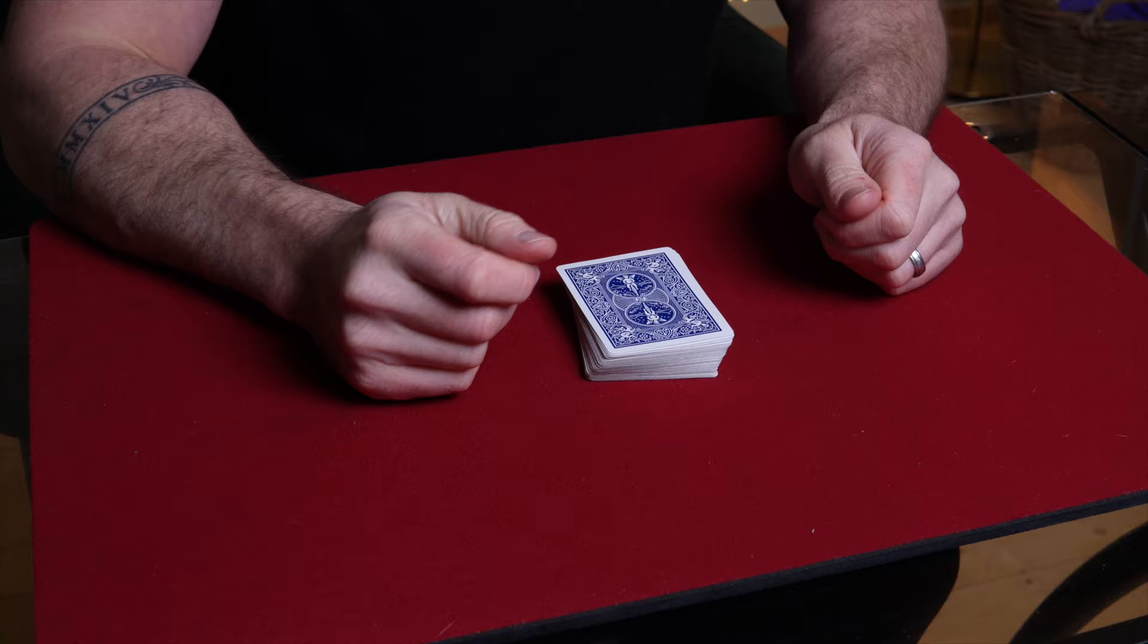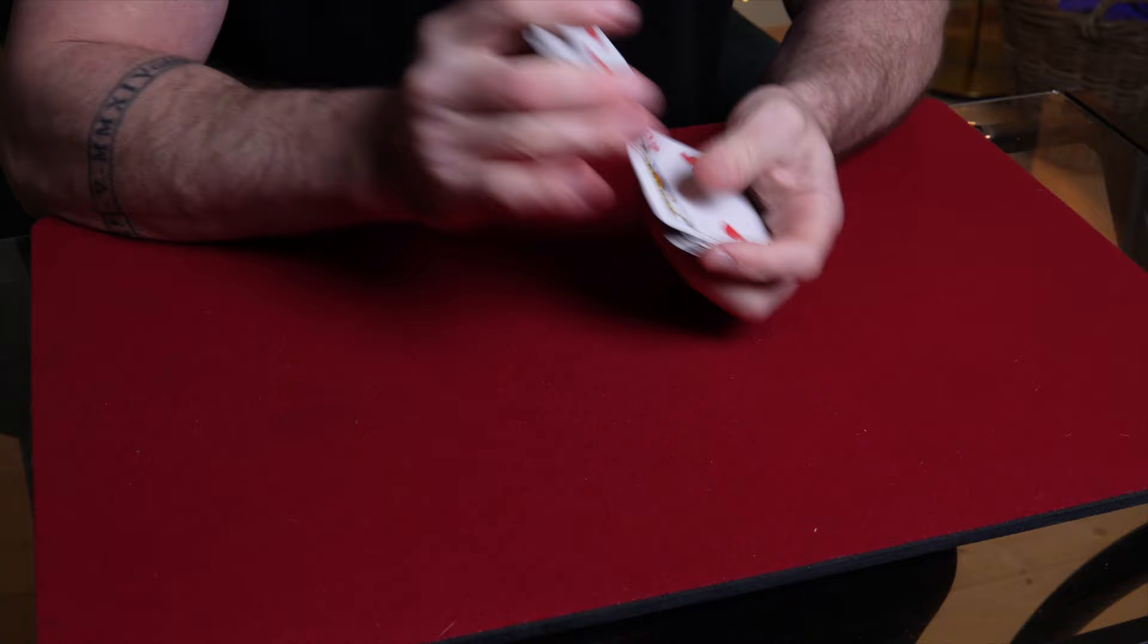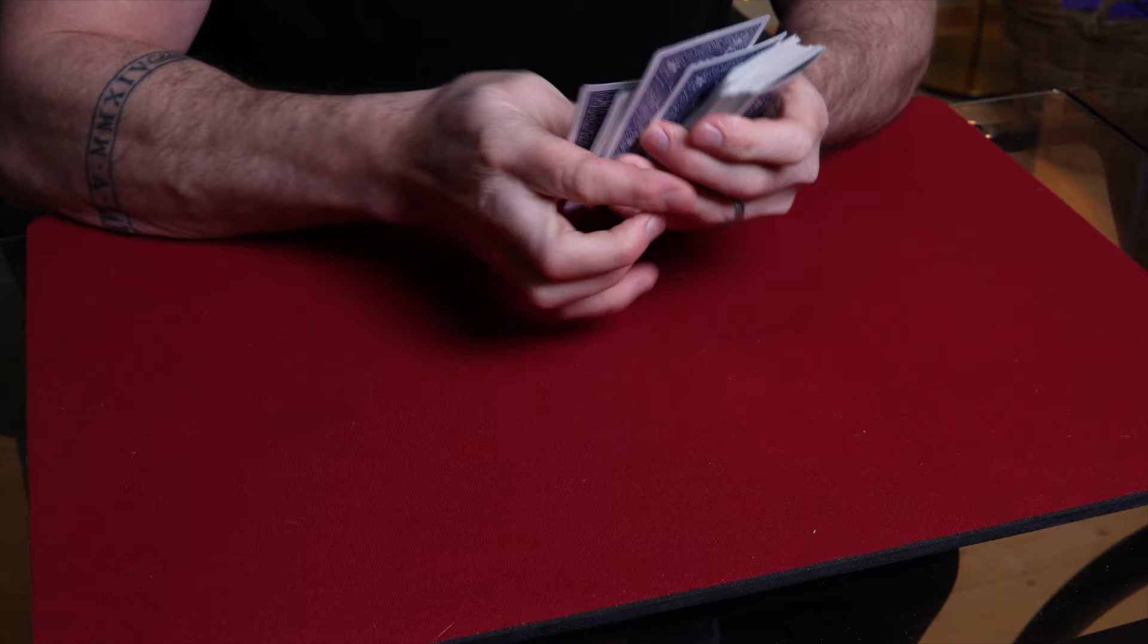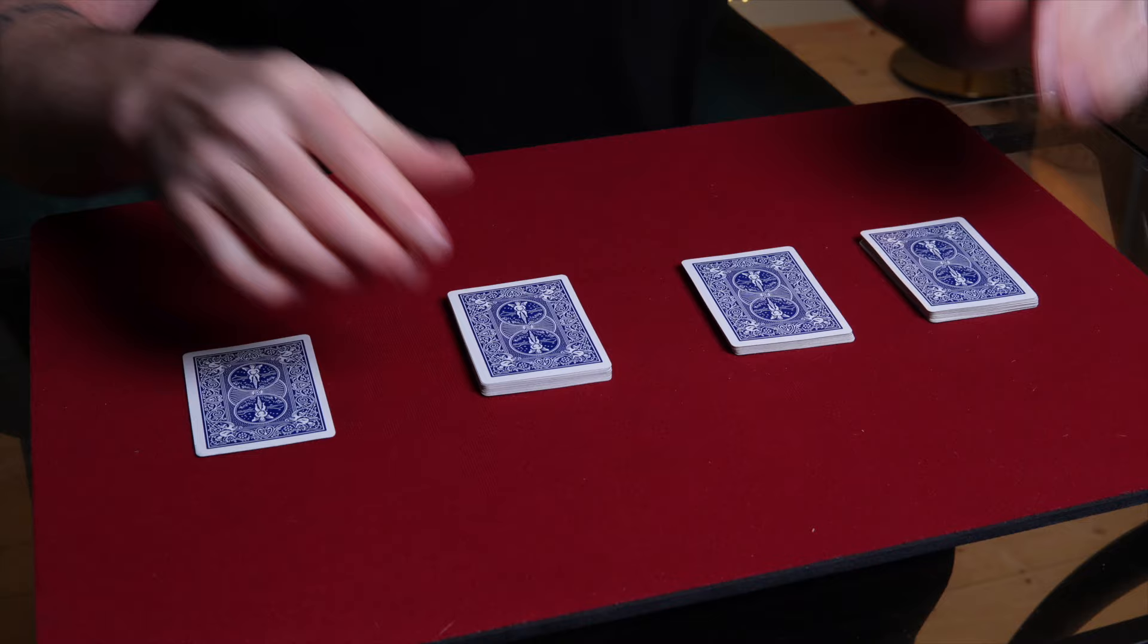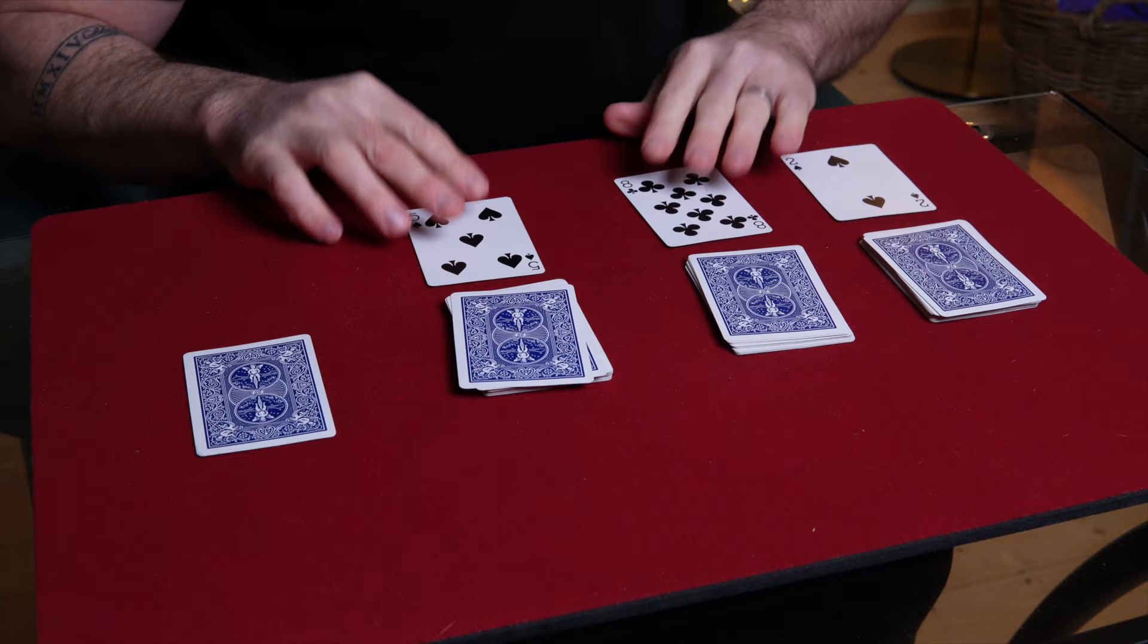Alright guys, so this is what the trick looks like. Basically, before we start, I'm going to make a prediction. So if we take one card out, this is going to be a prediction for something that's going to happen in a minute. So then you give the cards to the person you're doing the trick to and you ask them to cut them into three piles. So they can cut literally anywhere they want and you show them the cards they cut to. So we've got a two, a five, and an eight.